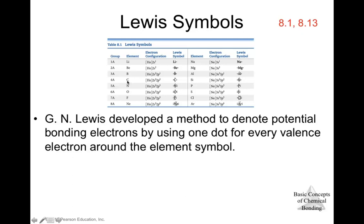For carbon, which is family four, we have four valence electrons, so we write one electron on each of the four sides of the carbon symbol — top, bottom, right, and left. The same applies to silicon: Si with four electrons, one on each side.